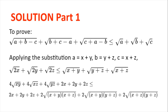Applying the substitution a equals x plus y, b equals y plus z, and c equals x plus z, we get the square root of 2x plus the square root of 2y plus the square root of 2z less than or equal to the square root of x plus y, plus the square root of y plus z, plus the square root of x plus z.